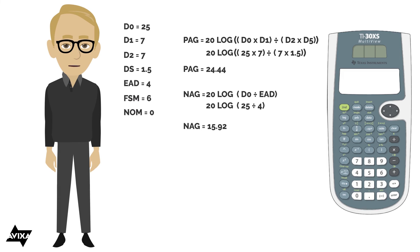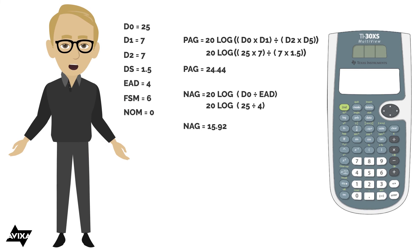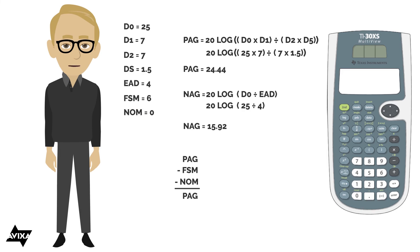Two more things we need to factor in. We've checked off D0, D1, D2, DS, and the EAD. We still have FSM and NOM to deal with, the feedback stability margin and the number of open microphones. The NOM here, we were using automatic microphone mixer. I can do one of two things here. I can take my PAG and subtract, because I want to take it away from the potential of my system, negative or minus the FSM and minus the NOM to come up with a final PAG.